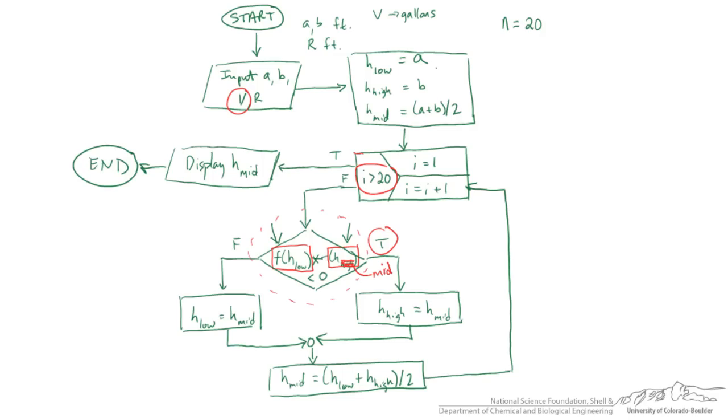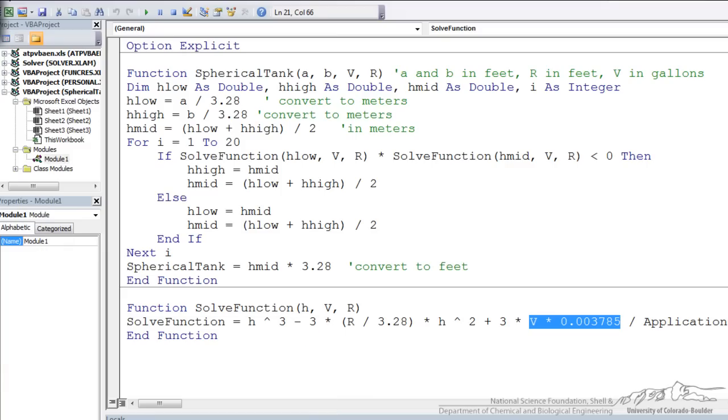We're taking advantage of another function. So a function within a function. If we look back at the code, again, we're using our main function is spherical tank. But we are using another function. And this is the function that we're trying to zero.